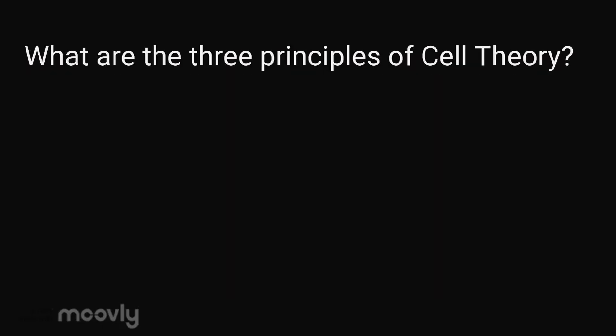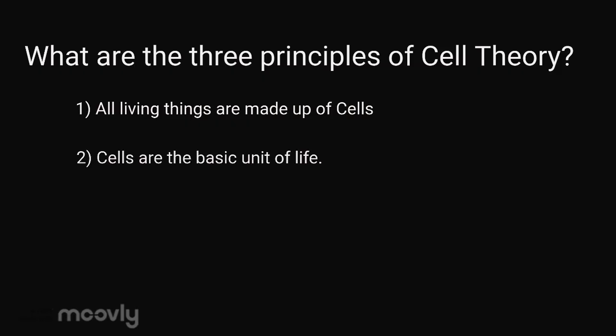What are the three principles of Cell Theory? 1. All living things are made up of cells. 2. Cells are the basic unit of life. 3. Cells can only arise from cells.